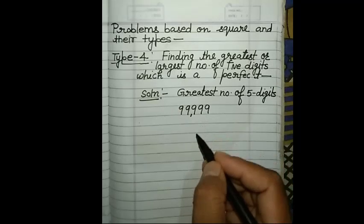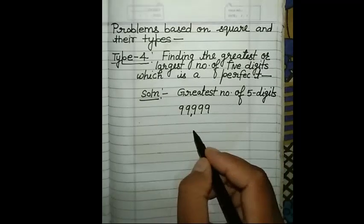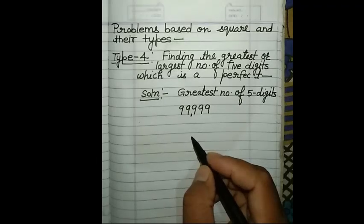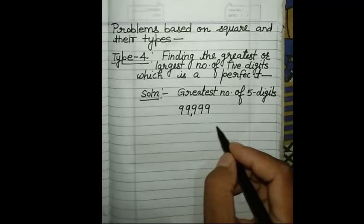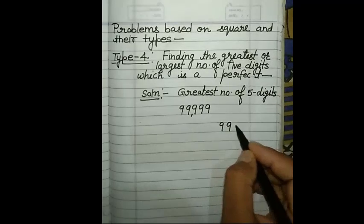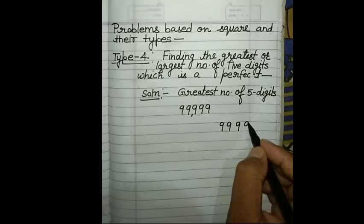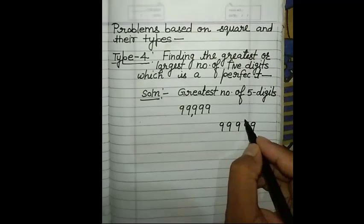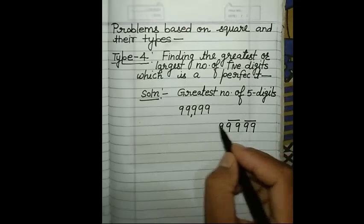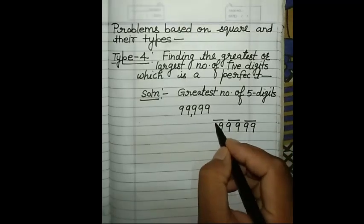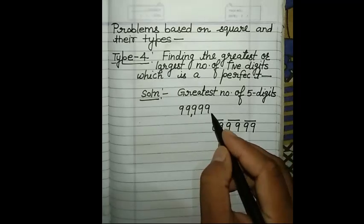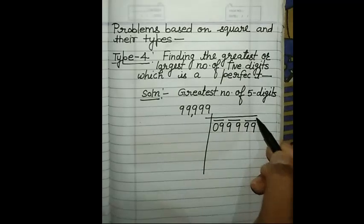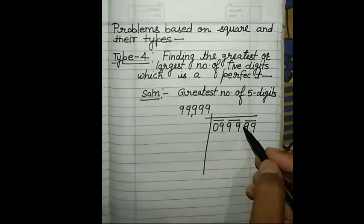So the greatest 5-digit number is 99,999. As shown in the previous video, we have to find the square root using the long division method. Let's find the square root of 99,999.